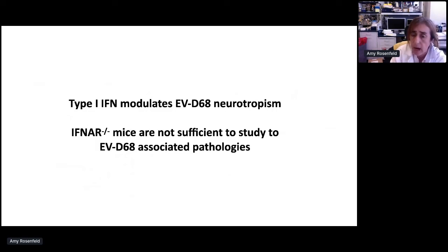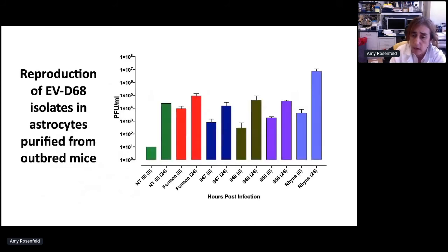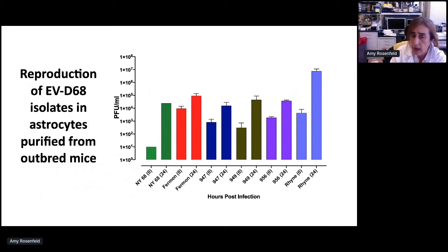To develop a broader animal model, we turned to outbred mice. We asked whether an outbred mouse line would be susceptible to EV68 by isolating astrocytes, culturing them, infecting them with multiple EV68 isolates, harvesting supernatants at 24 hours, and performing plaque assay for infectious virus progeny. All of our EV68 isolates replicated within these outbred mouse astrocytes, though with different efficiencies.